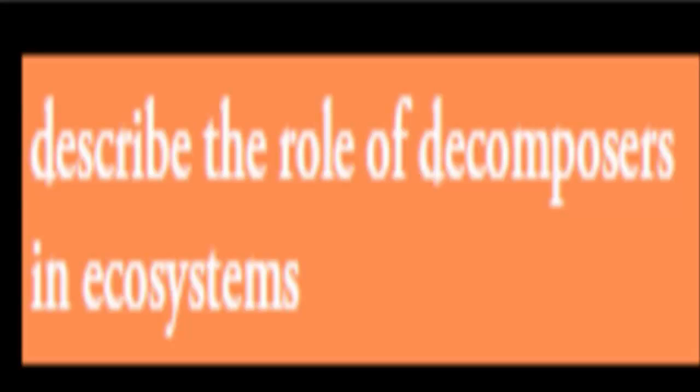Welcome back. In the last video we talked about some of the common types of relationships, biological relationships we can find within an ecosystem, such as allelopathy or mutualism. What we're going to do in this video is cover the next topic which says describe the role of decomposers in ecosystems.